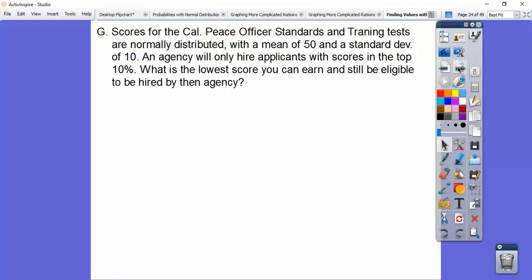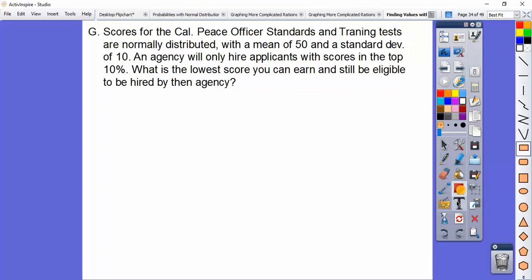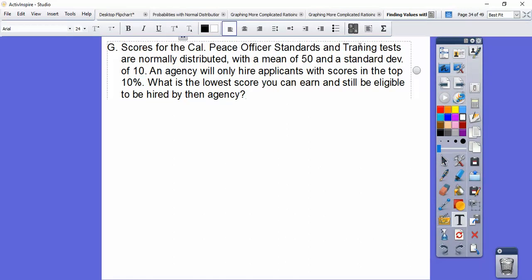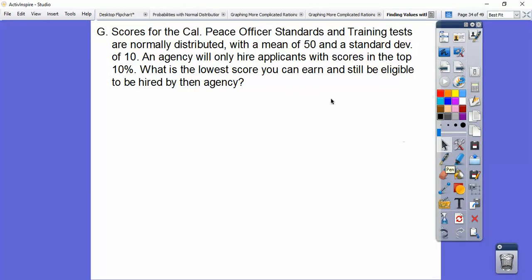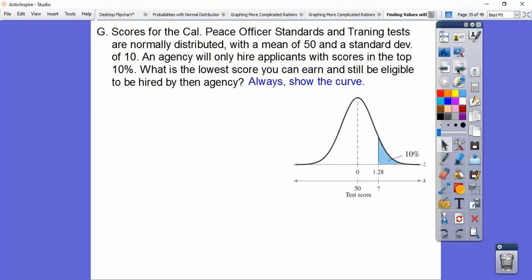Here's another one here. So scores for the California Peace Officers Standards and Training tests are normally distributed with a mean of 50 and a standard deviation of 10. An agency will only hire applicants with scores in the top 10%. The top 10% is going to be shaded to the right. So we want the z-score for it shaded to the left.